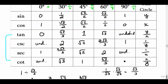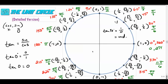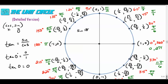Cotangent of 90° is cosine over sine, which is 0 over 1 — that's just 0. For 180°: the sine of 180° is the y-value, which is 0; the cosine of 180° is the x-value, which is negative 1; and the tangent of 180° is 0 over negative 1, which is 0.